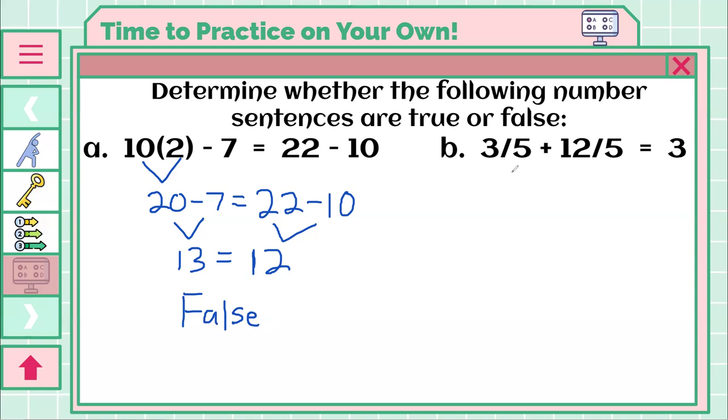Taking a look at B, you have fractions. So first and foremost, if you chose to turn your fractions into decimals, which is probably a bit easier, you don't have to, but you could. If you did 3 divided by 5, you would have 0.6. And if you did 12 divided by 5, you'd have 2.4. And we're going to see if that equals 3. From here, if you combined your 0.6 and your 2.4, and you got 3.